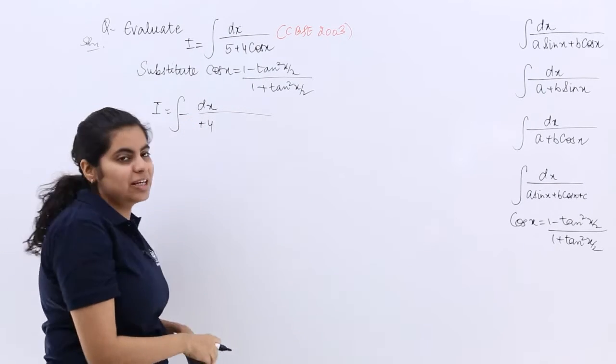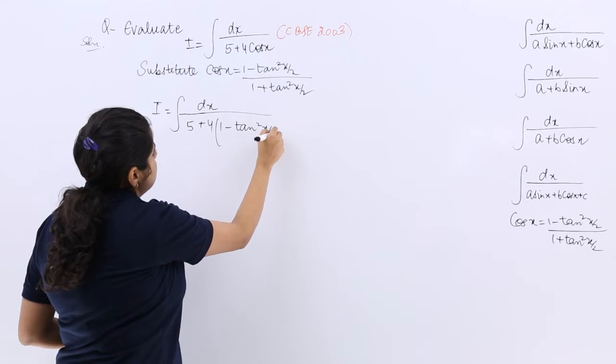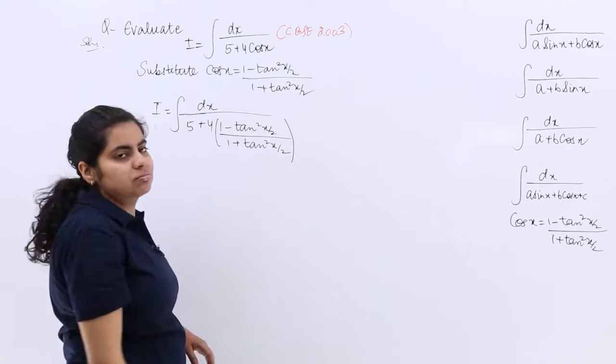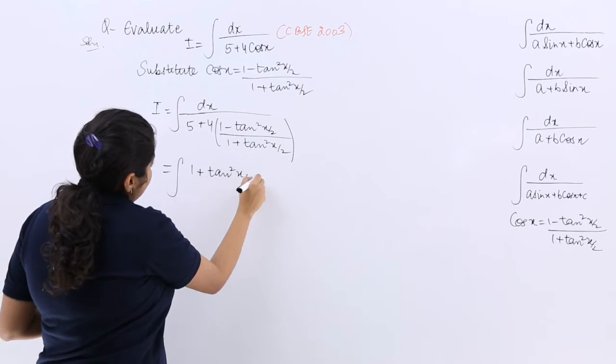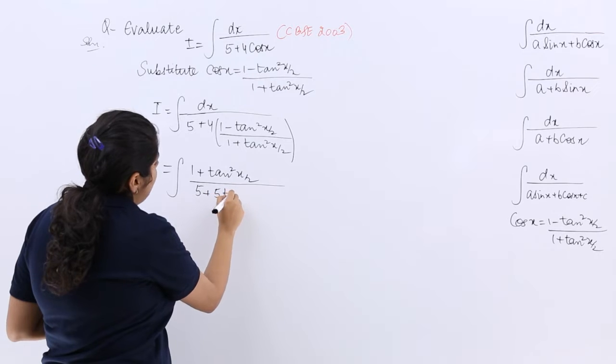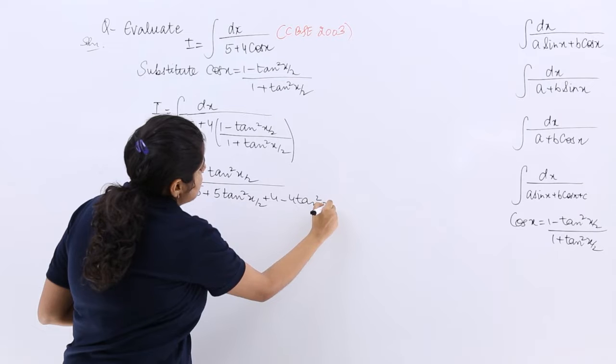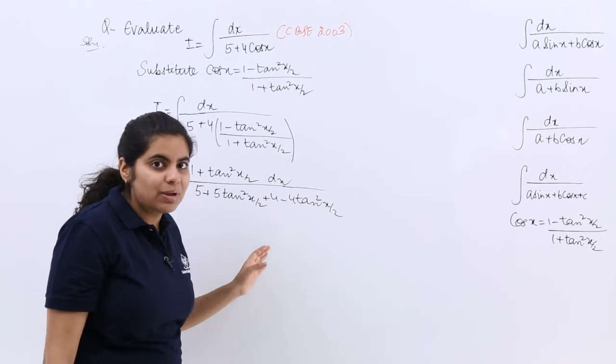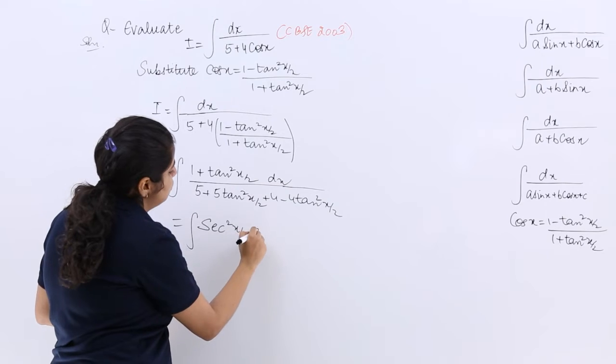Let me write it clearly: ∫ dx/(5 + 4(1 - tan²(x/2))/(1 + tan²(x/2))). And dx does not change. Now, sec²(θ) - tan²(θ) = 1, so the numerator changes to sec²(x/2) dx.